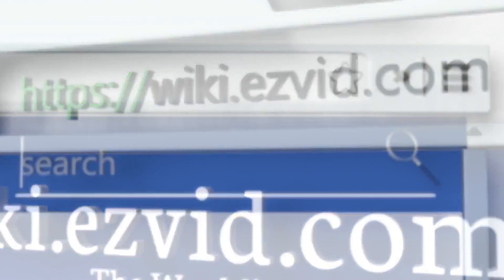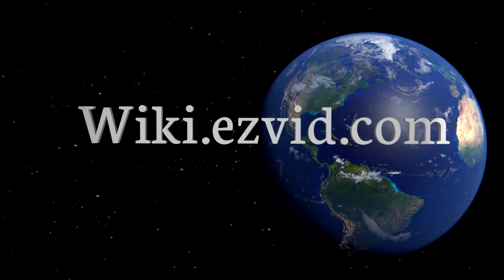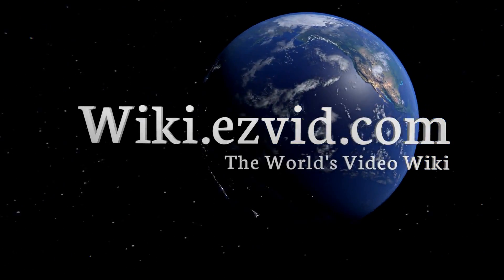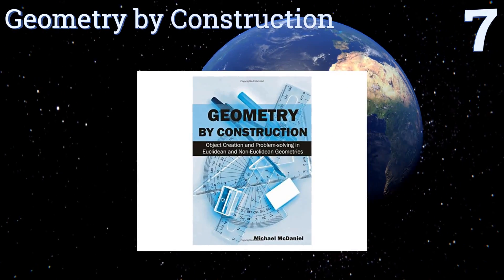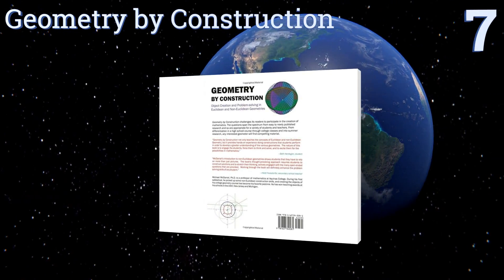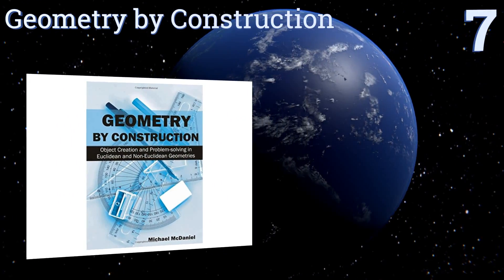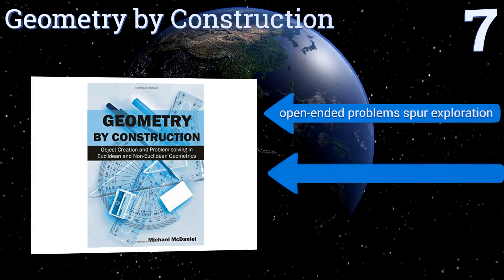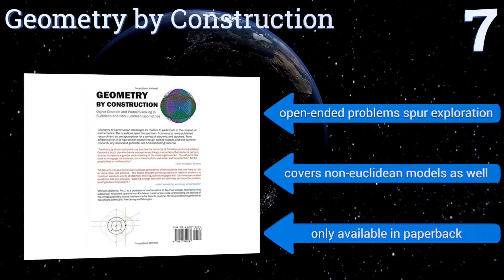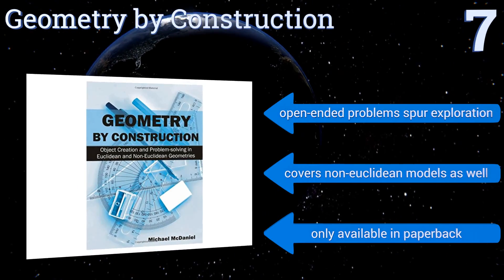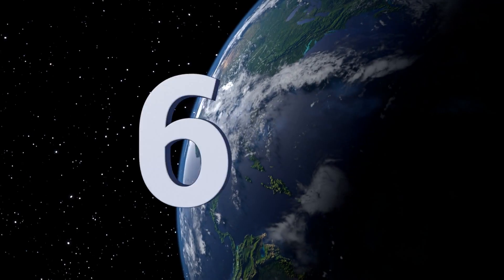At number 7, advanced learners are sure to find something new and instructive in Geometry by Construction, as it spans the science's origins through modern applications. This is an old-school book that expects you to use pencil and paper instead of looking up answers online. It's open-ended problems spur exploration and it covers non-Euclidean models as well, but it's only available in paperback.